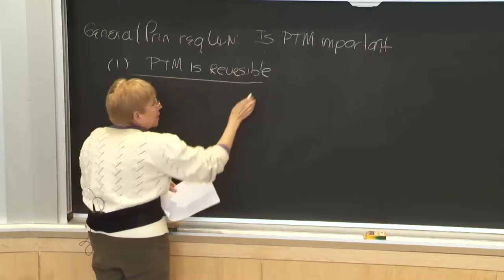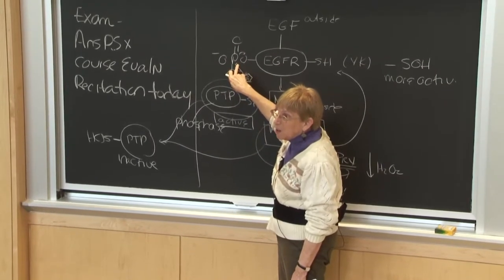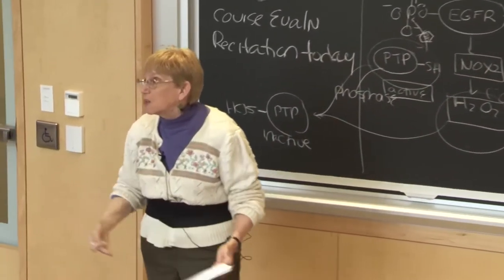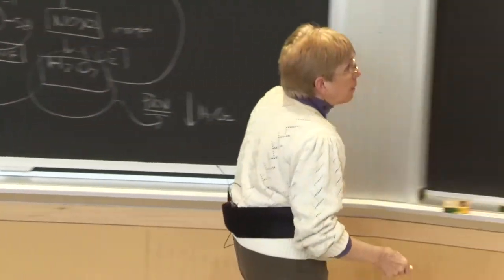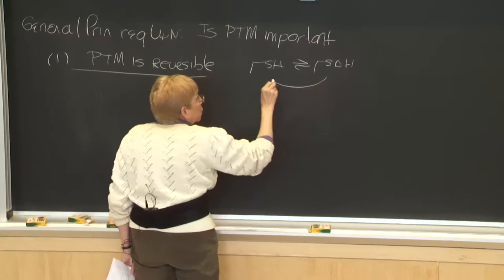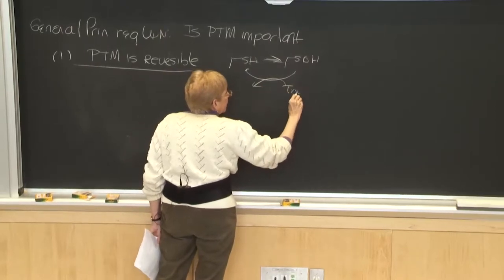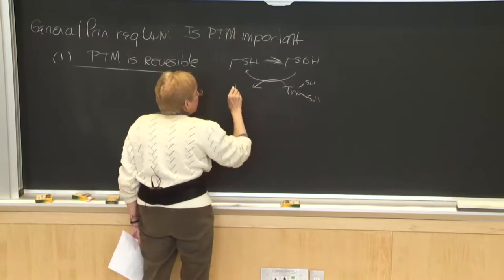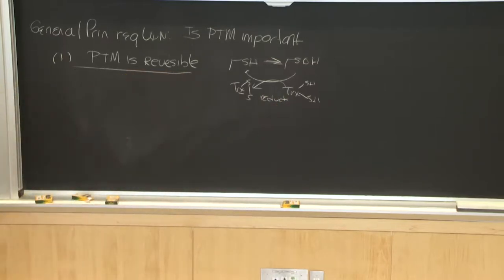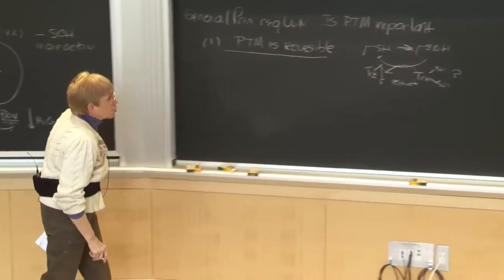The first general principle is that post-translational modification needs to be reversible. Whether it's phosphorylation/dephosphorylation, acetylation/deacetylation, methylation, or ubiquitination/deubiquitination — it needs to be reversible. In the case of sulfenylation related to oxidative stress, you need a reductant to convert the SOH back to the cysteine. Thioredoxin is one candidate, though it hasn't been specifically identified in the NOX2/EGF receptor system.